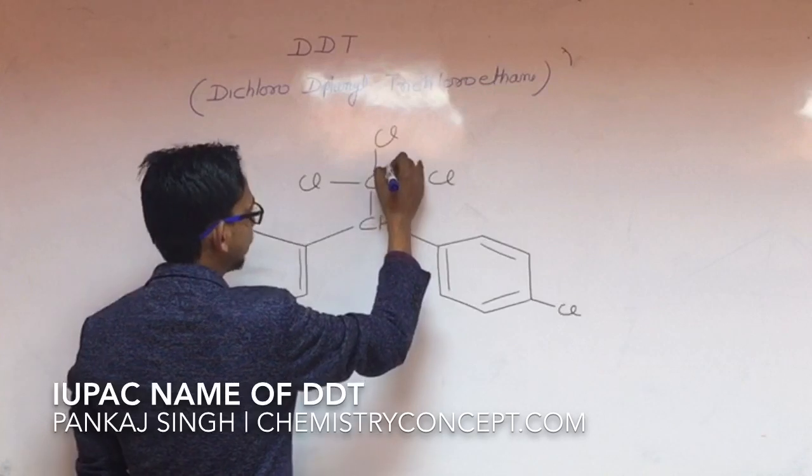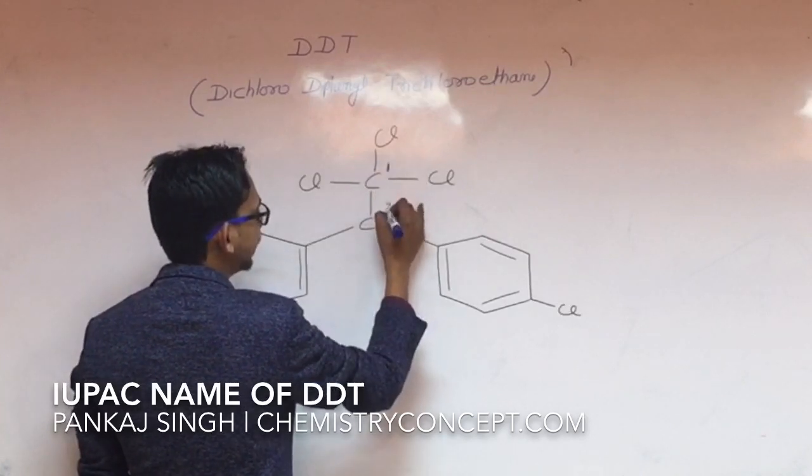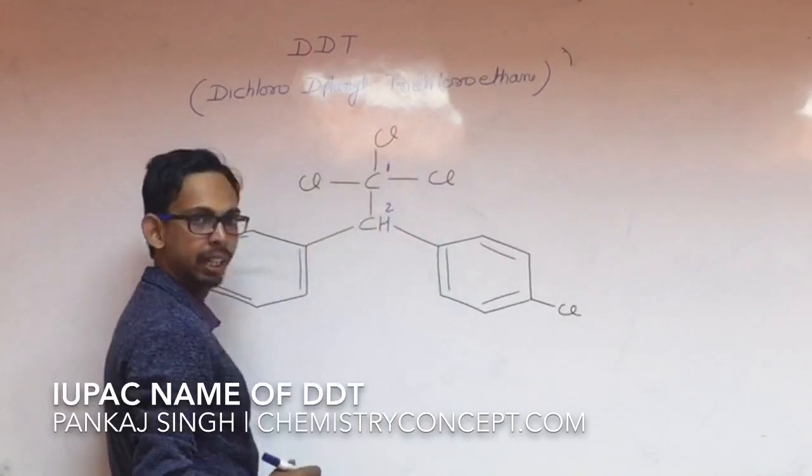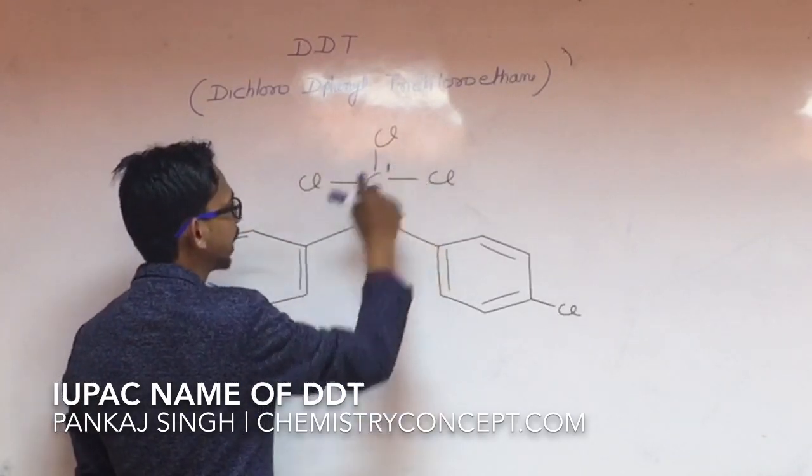In the first one, assume that this is the main group and these are the side chains. Main compound is ethane which has three chlorines on carbon one.